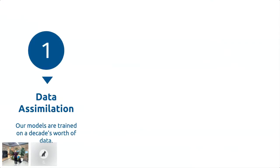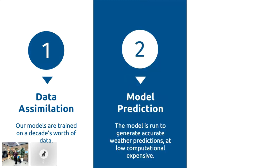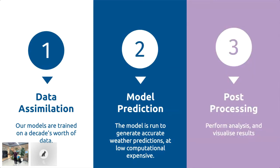Let me show you how this works. We take the weather data from the past decade and process it through our models. We find weather patterns and forecast parameters such as temperature, wind, and humidity. These models are then used to make predictions at a low computational expense, following which post-processing can be done.